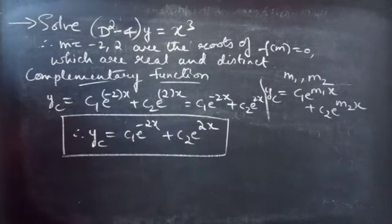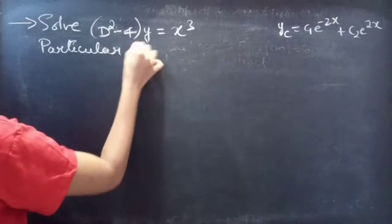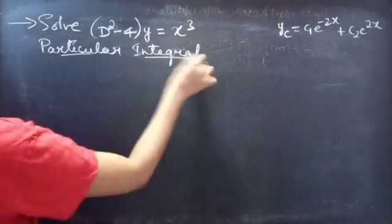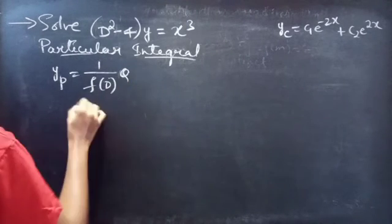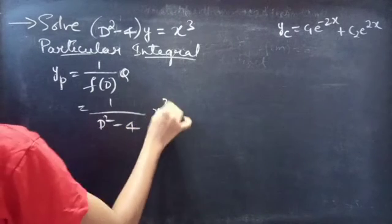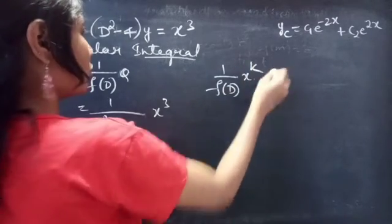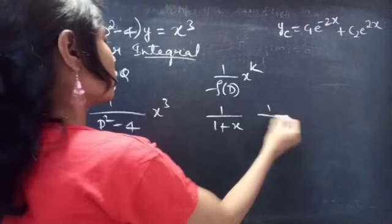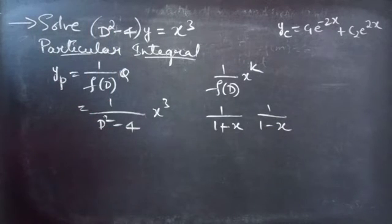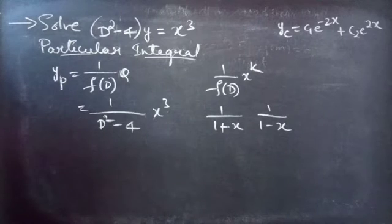Now let us find the particular integral. We find yp using yp equals 1 by f(D) into Q, where f(D) equals D squared minus 4 and Q is x cubed. Since we have yp of 1 by f(D) into x to the power k form, we will write the fraction in the form 1 by (1 plus x) or 1 by (1 minus x), and then use binomial series expansion. Since we have x cubed, we will get derivatives till D cubed.